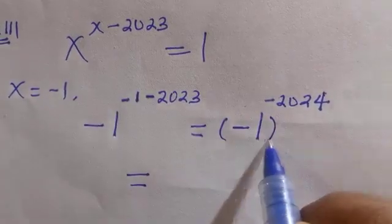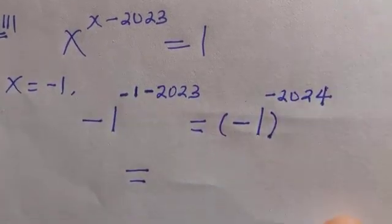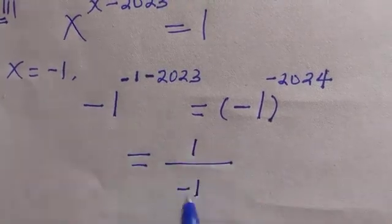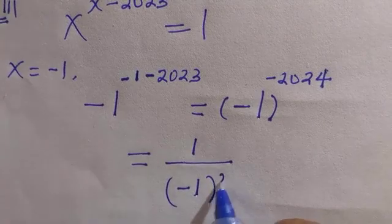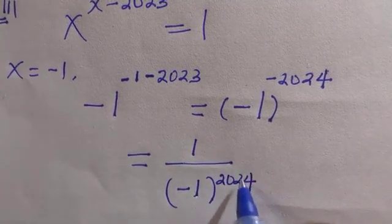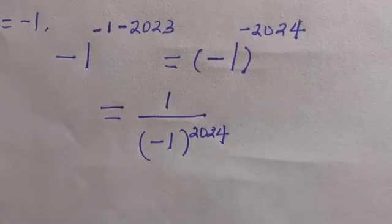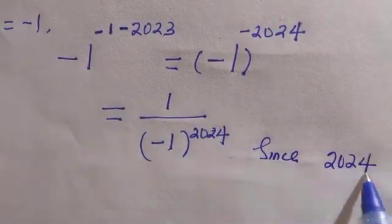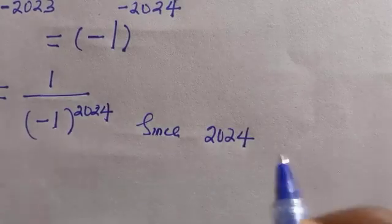We can write this as 1 divided by minus 1 raised to power 2024. The base is negative, but the power is an even number, 2024, so everything becomes positive.